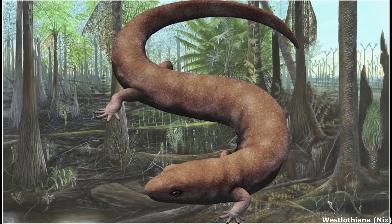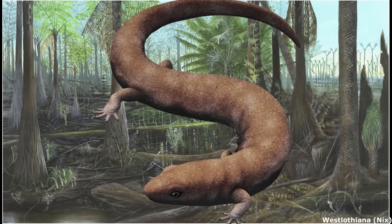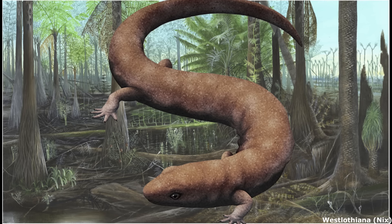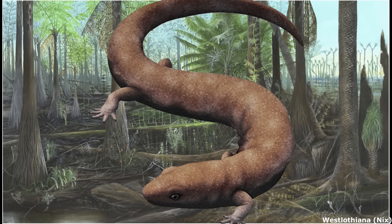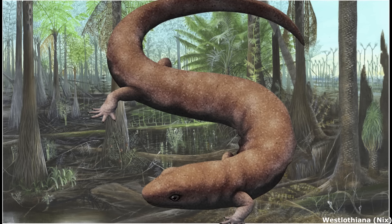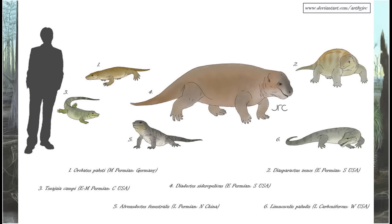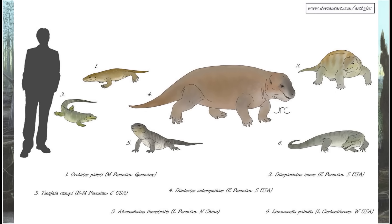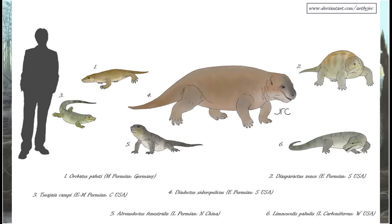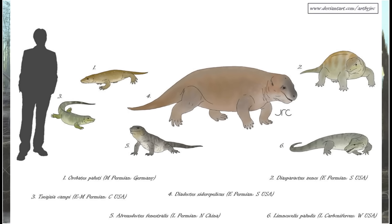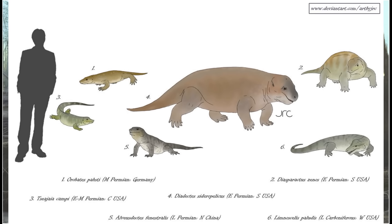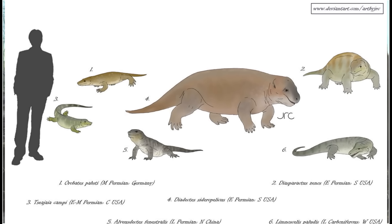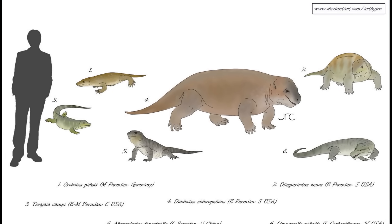The common ancestor in question likely resembled the controversial genus Westlothiana, with the development of the amniote egg occurring in very small animals measuring just 20 cm long or less. Another group with controversial relationships, that may or may not be early amniotes, were the diadectomorphs, a lineage that first appeared in the late Carboniferous and produced the first fully large terrestrial herbivores in Earth's history. However, the most basal members of this clade were carnivores, as represented by the genus Limnoscellus.